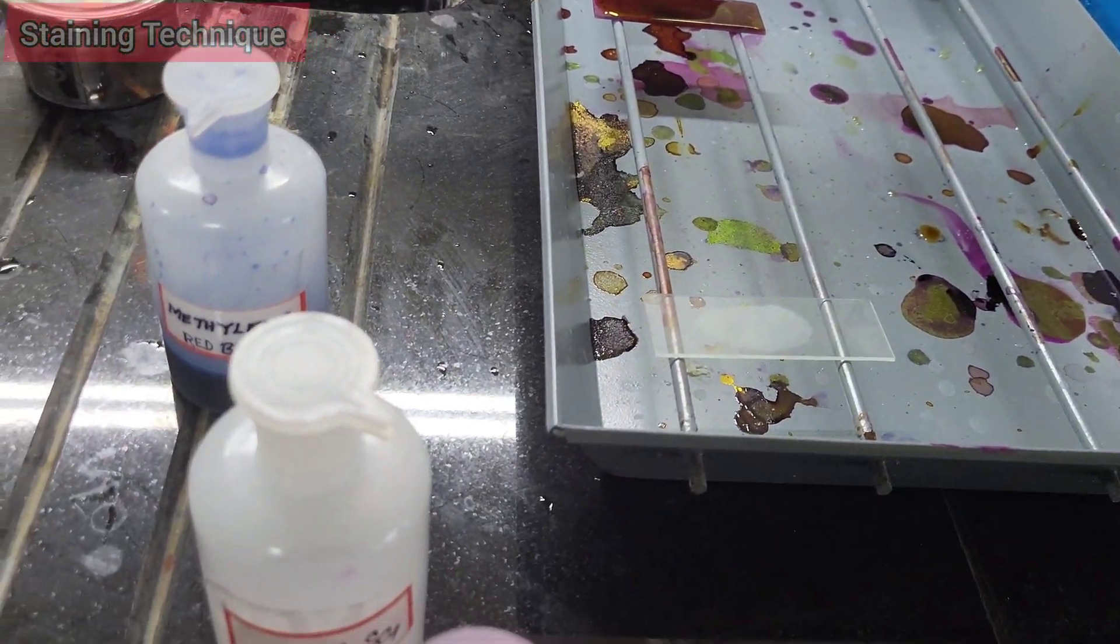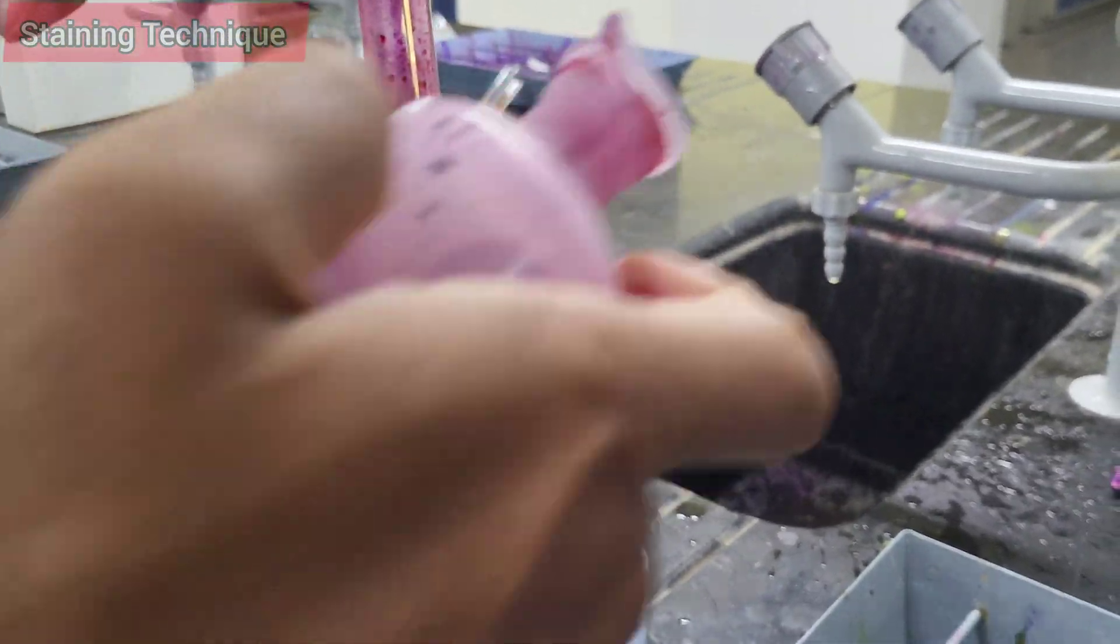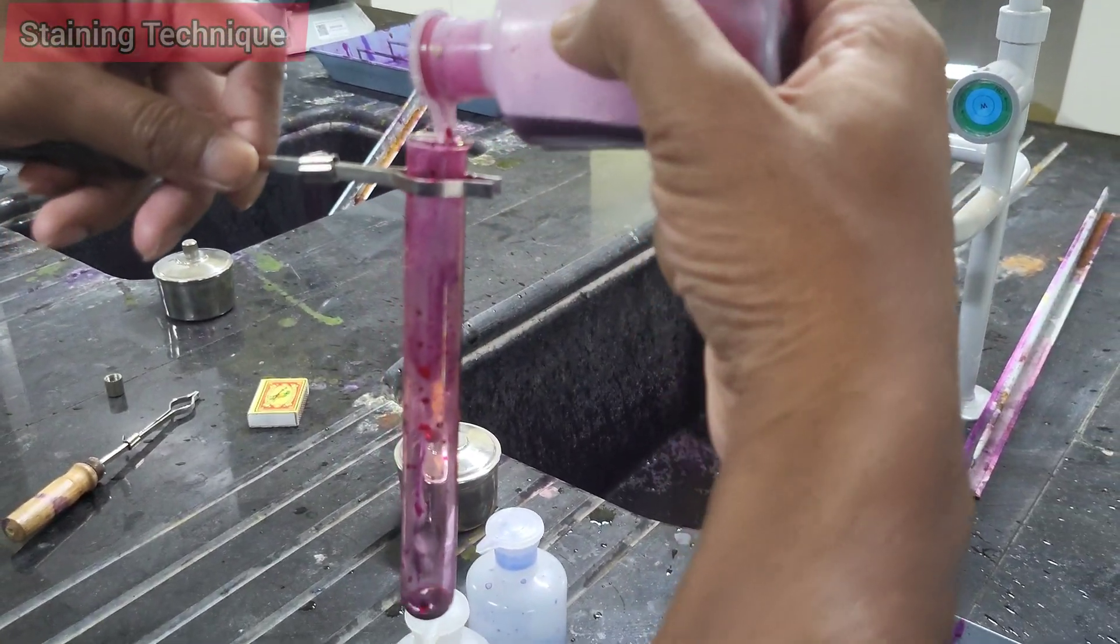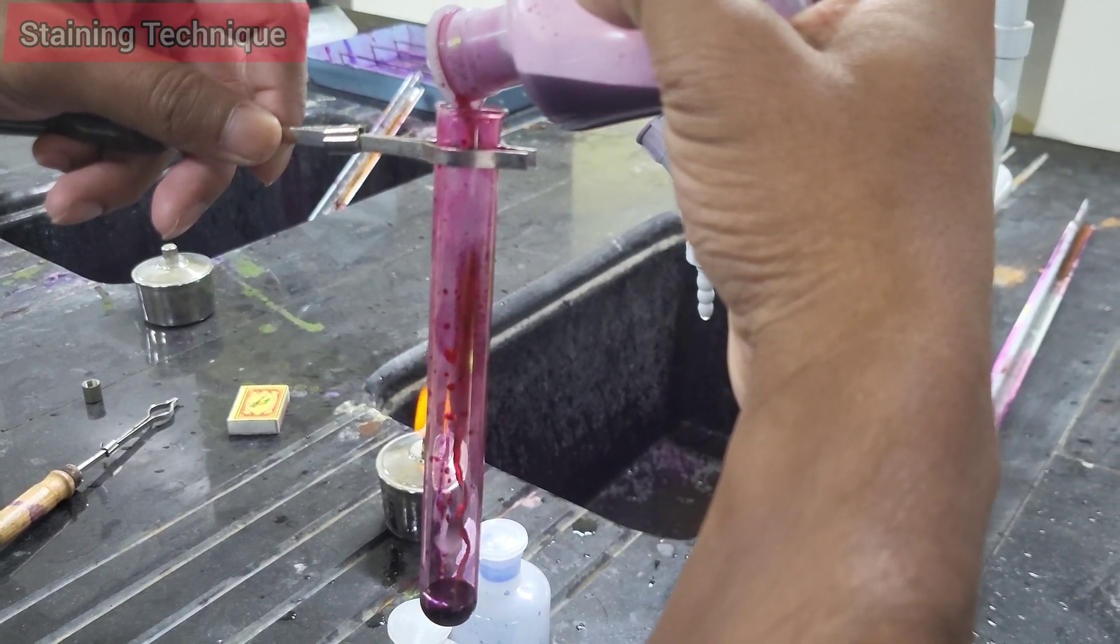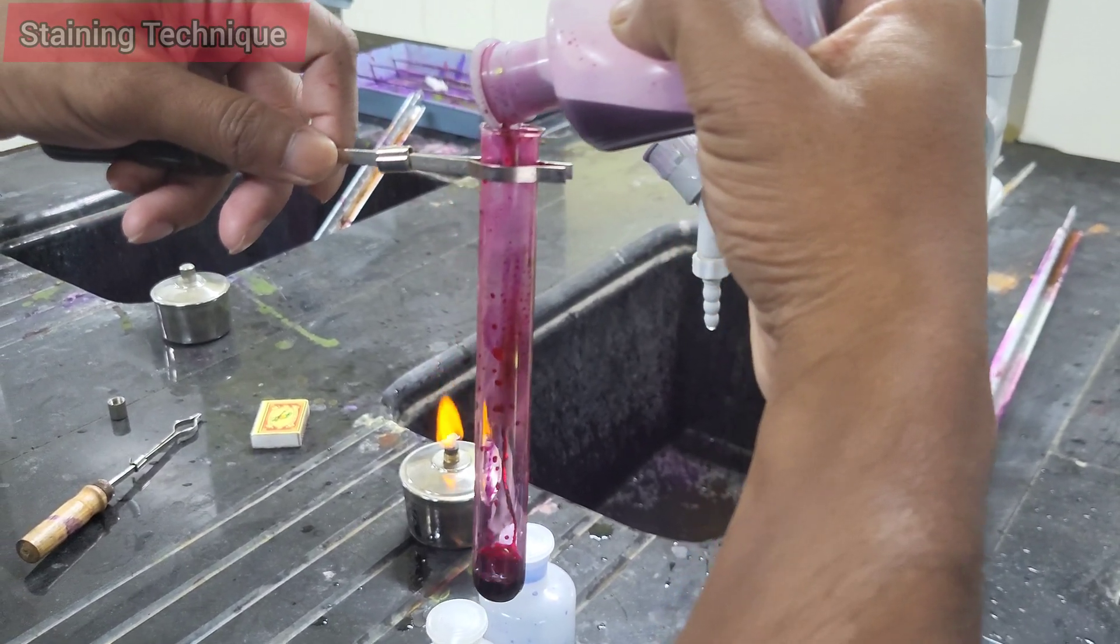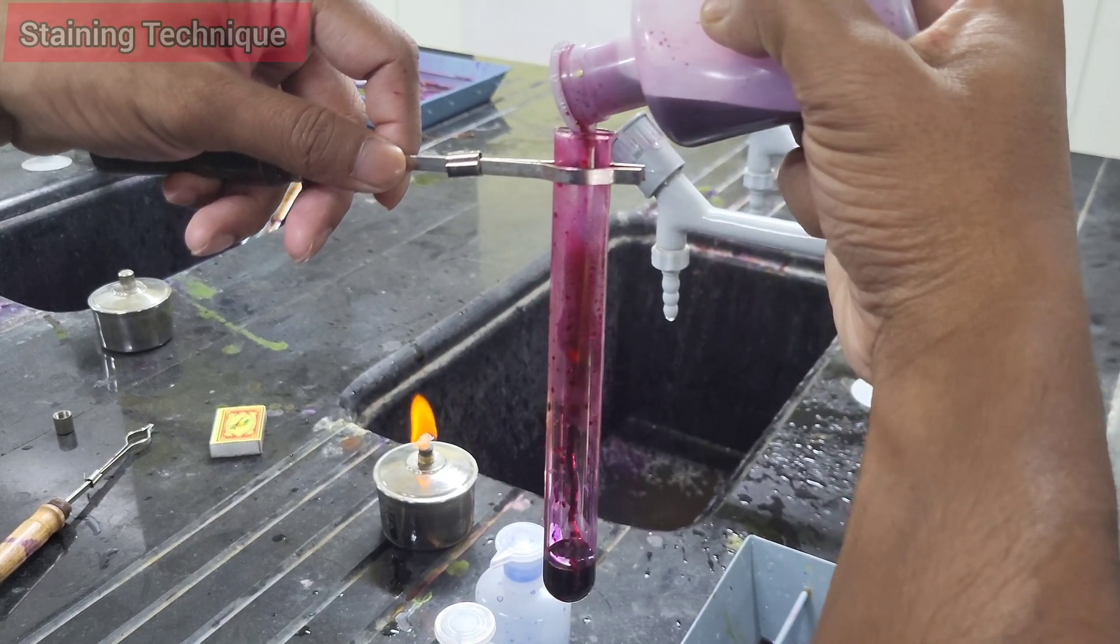Or you can heat the carbolfuchsin in test tube and pour it over the slide and wait for five minutes. Why carbolfuchsin used in Ziehl staining? It's a phenolic dye that penetrates the waxy cell wall. Why heat is applied during staining process? Heat enhances the penetration of carbolfuchsin in the waxy cell wall of acid-fast organisms.